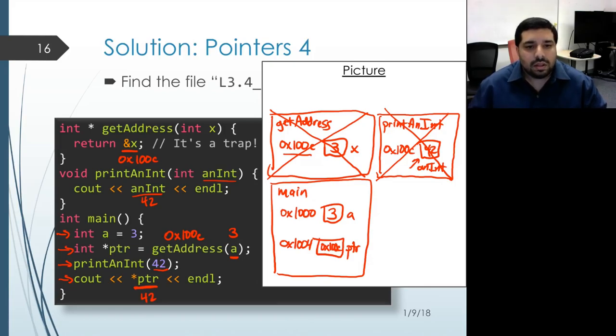But again, according to the C++ standard, the result is undefined, which means that we could get 42, we could get something else. And we can't reliably assume that a particular value is going to get printed out.